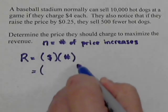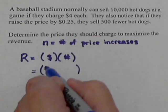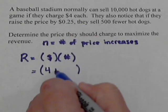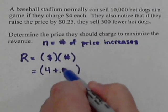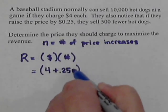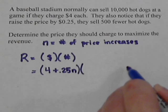So, what's our cost equation going to be? Well, we know we start out charging $4 for a hot dog. But that's going to change, and we're going to change it by 25 cents each time. So, it's going to be 4 plus 25 cents for each time we raise the price.